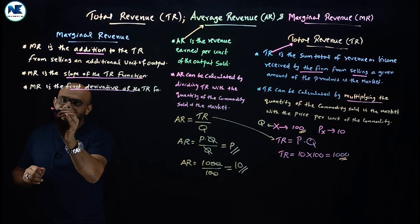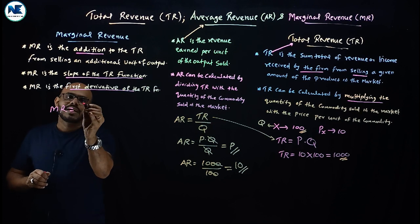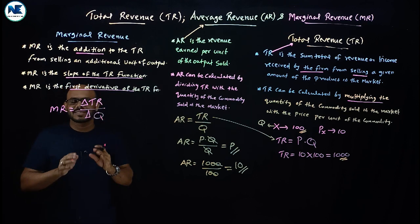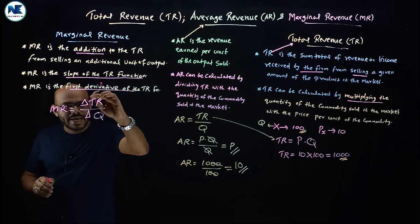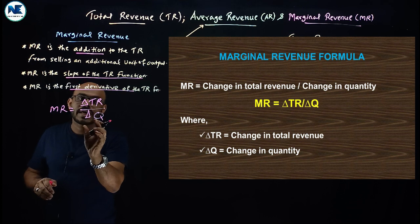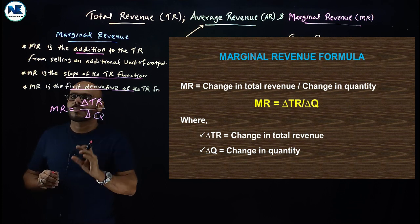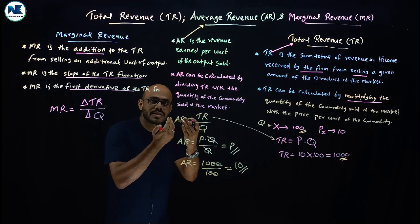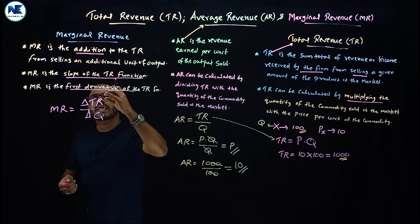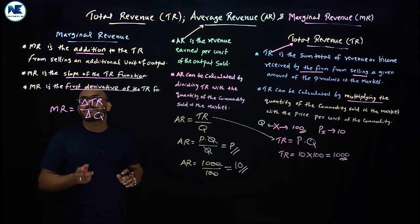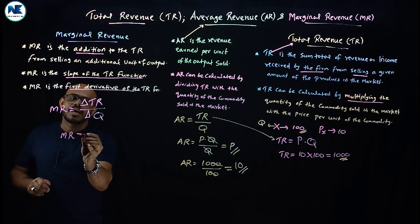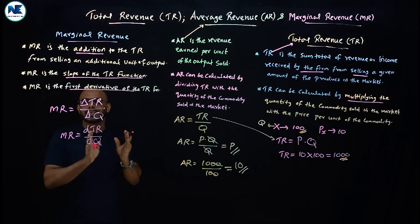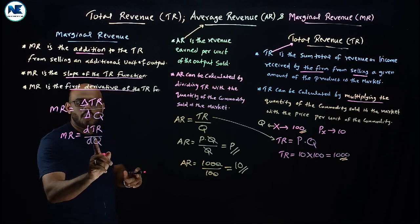Marginal revenue is equal to delta TR divided by delta Q. This is the formula — delta TR means the change in total revenue on account of a change in the quantity of the commodity sold in the market. When an additional or extra unit is sold, the change in total revenue gives us marginal revenue.